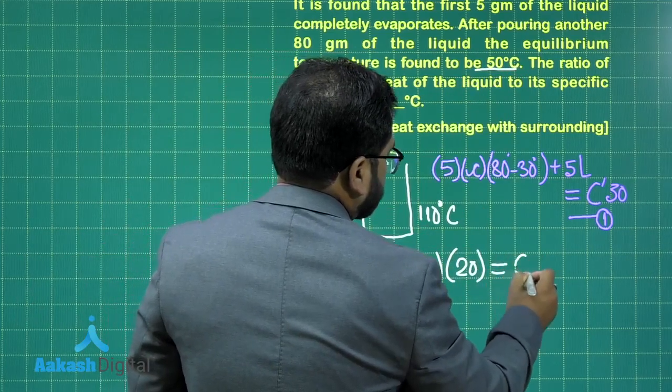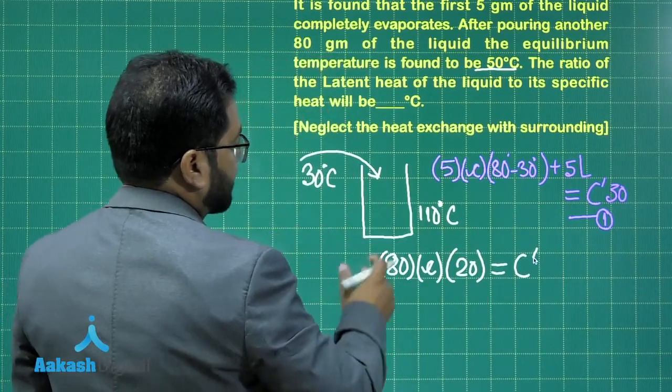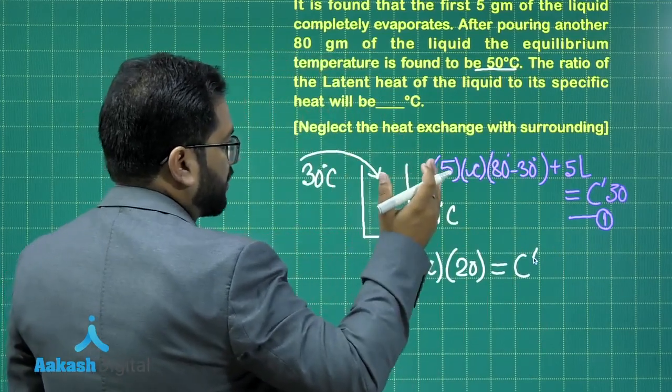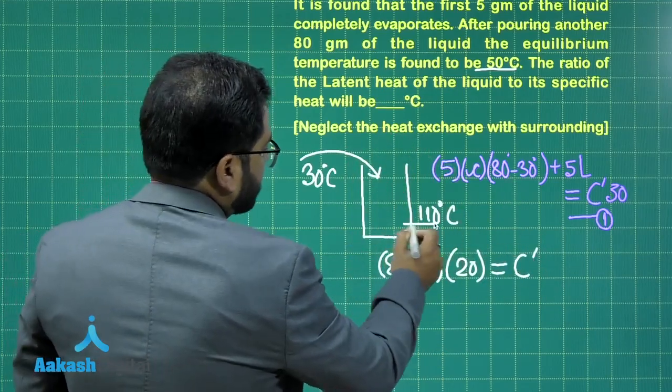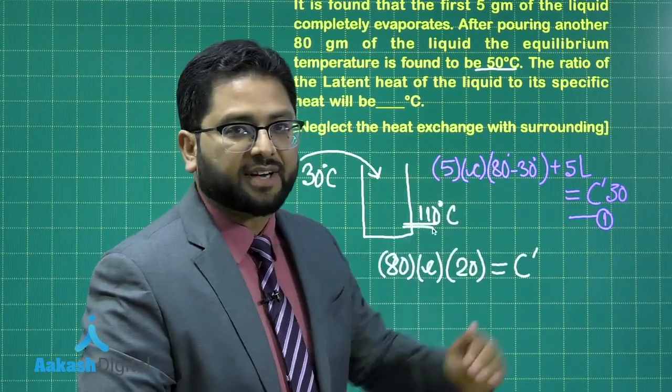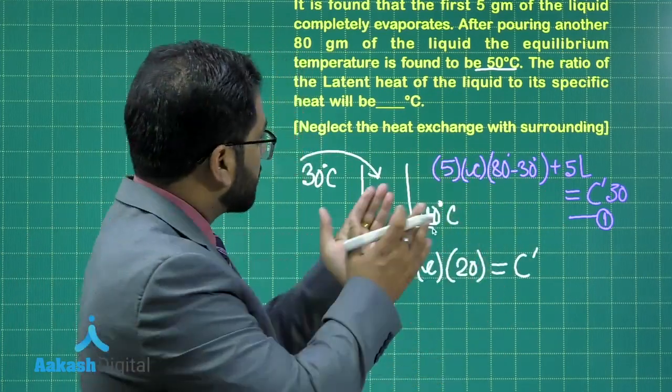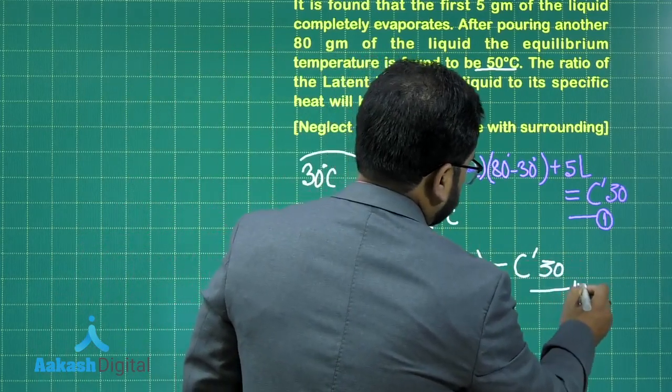And that will be equals to C dash, the heat capacity of the calorimeter. And this will come from 80 degrees to 50 degrees. Remember, the calorimeter now has reached to 80 degrees upon addition of the first 5 grams. So 80 to 50, the fall in temperature would be 30. That's equation number two.